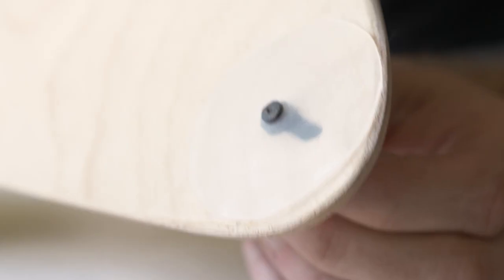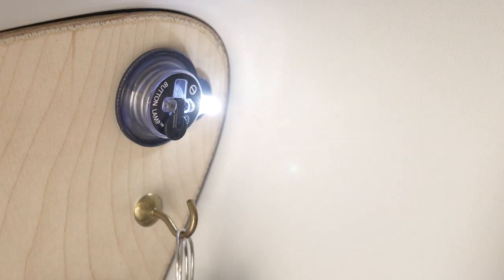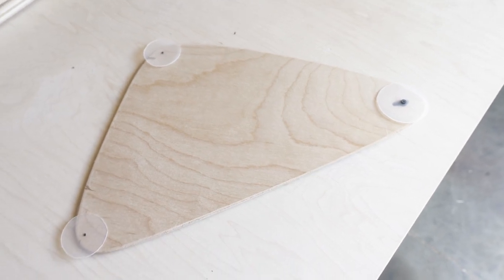From that point, you can add hooks or velcro or drill whatever holes you want to attach things to this because you have a solid surface that is not actually part of your vehicle that you can alter all you want.